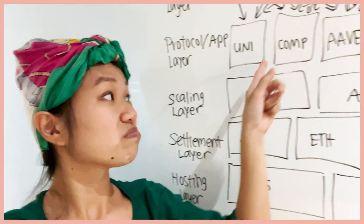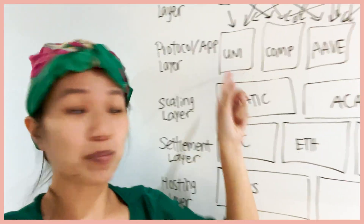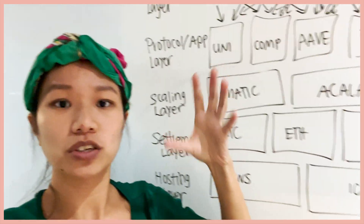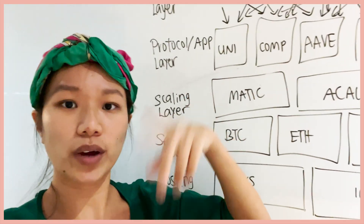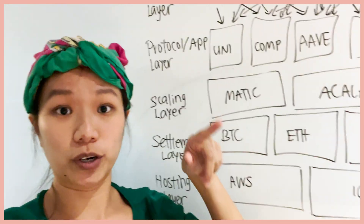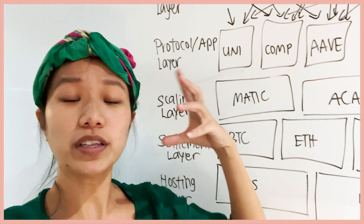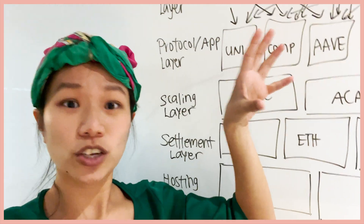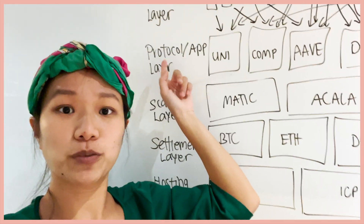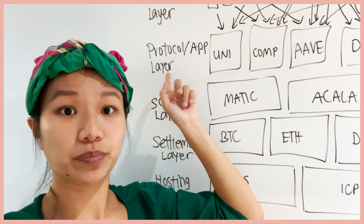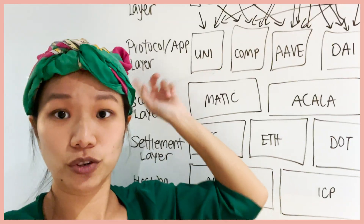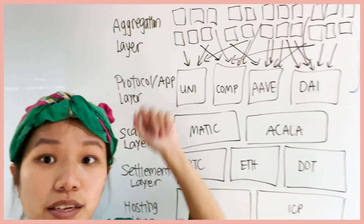Think of them as your Facebook app or your Instagram app on your phone. They just run one function to allow you to access that network — the Facebook network. Whatever people are tweeting, you don't have that on your Facebook app. They're all very specific applications, but they run basically like a protocol. That's why it's called the protocol application layer.